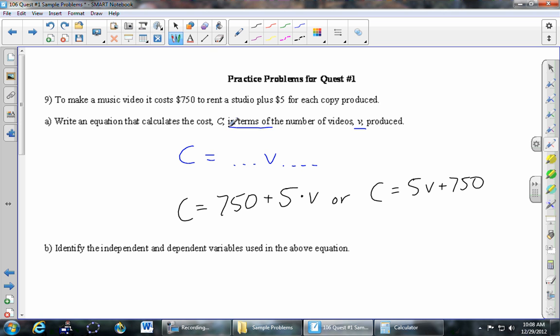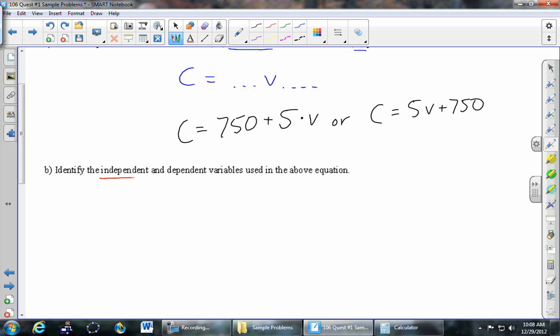So the one that's buried is the independent one. The independent one—I'll just say it's the one that's buried—in our case it's the V. And then the dependent one...